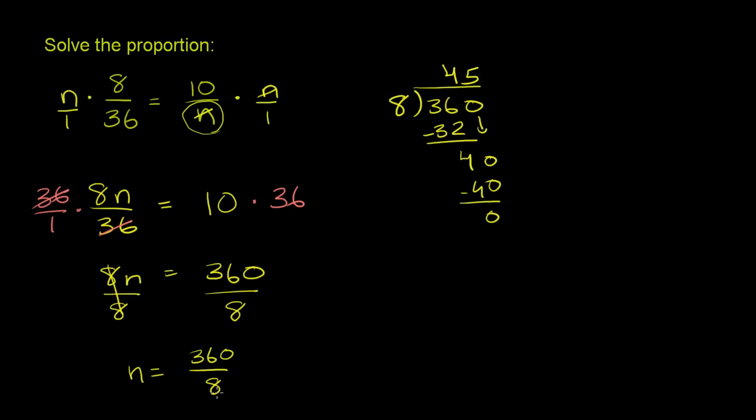So n is equal to 360 over 8, which is the exact same thing as 45. So going back to our original proportion, we now solved for n. And we know that 8 over 36 is the same exact thing as 10 over 45.